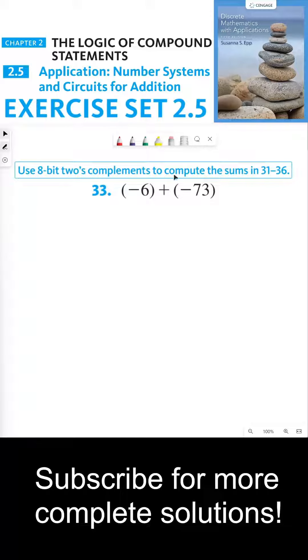Use 8-bit 2's complements to compute the sums in 31 through 36. Number 33 says negative 6 plus negative 73. Whenever we're computing sums using 8-bit 2's complements, we need to convert both of these decimal representations into their corresponding 8-bit 2's complements.